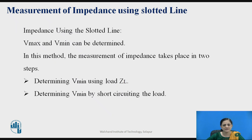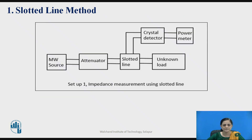The measurement of impedance using the slotted line is the first method. Here, the Vmax and Vmin values can be determined. In this method, we have to calculate the maximum and minimum values of the voltage. These two values can be measured in two steps: first, determine the Vmin value using load impedance ZL; second, determine the Vmin value by short-circuiting the load. This is setup number one for the slotted line method.